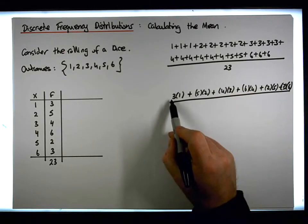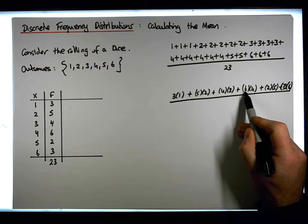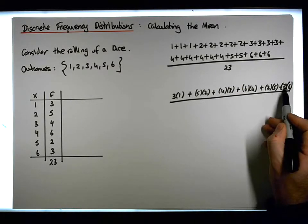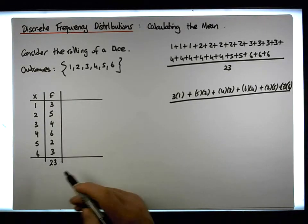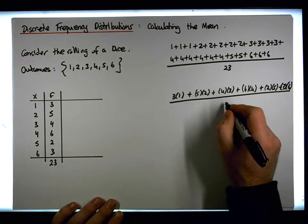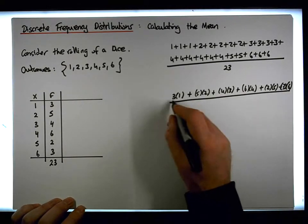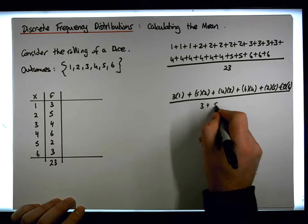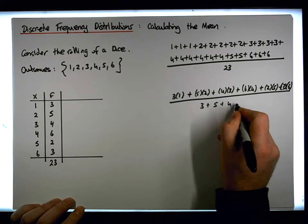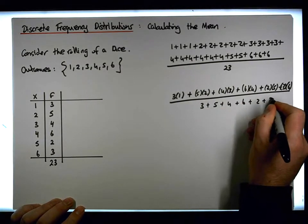Look, 3 plus 5 plus 4 plus 6 plus 2 plus 3 — the sum of the frequencies is 23. So that's the same as the sum of the frequencies, which is 3 plus 5 plus 4 plus 6 plus 2 plus 3.